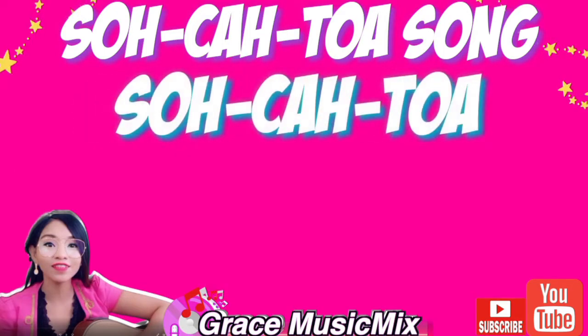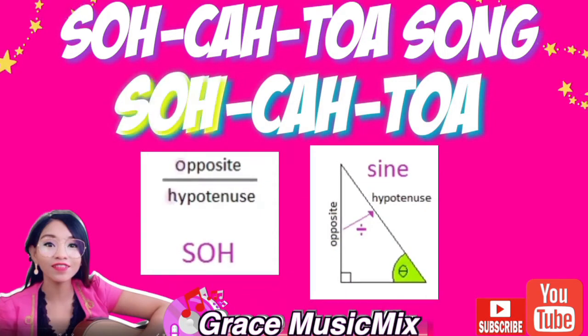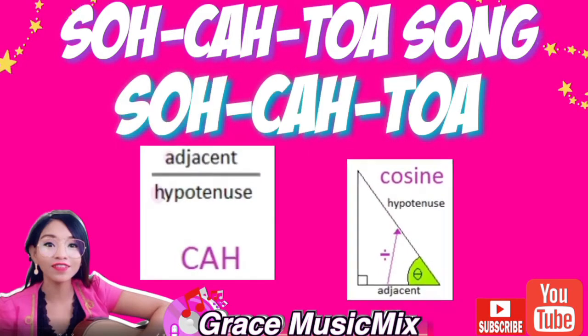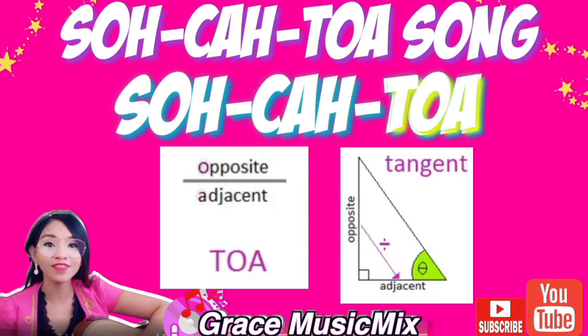SOH-CAH-TOA, SOH-CAH-TOA. Sine is opposite over hypotenuse. SOH-CAH-TOA, SOH-CAH-TOA. Cosine is adjacent over hypotenuse. SOH-CAH-TOA, SOH-CAH-TOA. Tangent is opposite over adjacent. SOH-CAH-TOA.